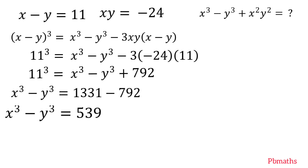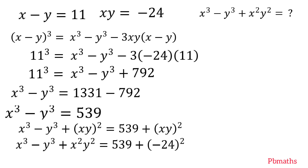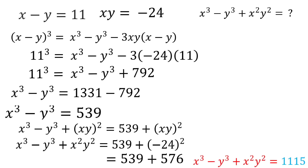We have found the value of x cube minus y cube, and now we need to find out the value of x square y square also. To find that, let's add xy whole square on both sides. Then x cube minus y cube plus xy whole square equals 539 plus xy whole square, which gives x cube minus y cube plus x square y square equals 539 plus minus 24 whole square, which equals 539 plus 576. The value of x cube minus y cube plus x square y square equals 1115.